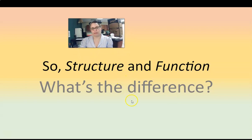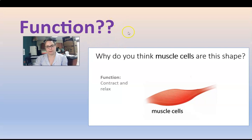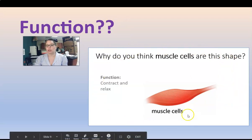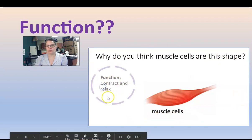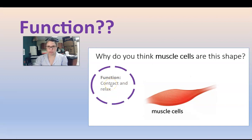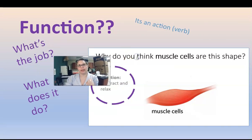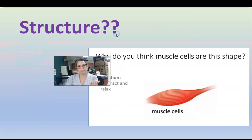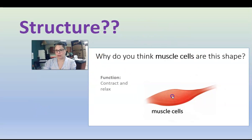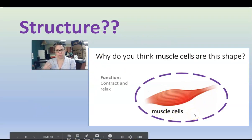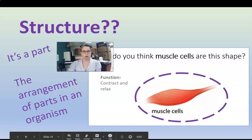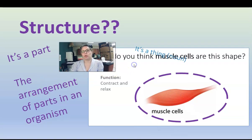So, structure and function — what's the difference? Function: what is a function? If we go back to the muscle slide we looked at earlier, function is the part that says 'contract and relax.' These are action words. So if it's an action, it's a job that it performs — it's the function. What's the job? What does it do? If it's an action word or a verb, it's the function. Structure, looking back at that same slide, is the actual part of the body that we're talking about. It's a part or an arrangement of parts, and structures are nouns or things — these are things in our body.